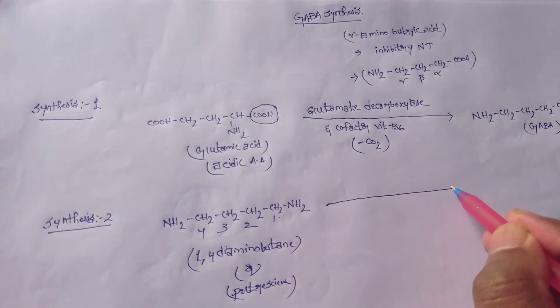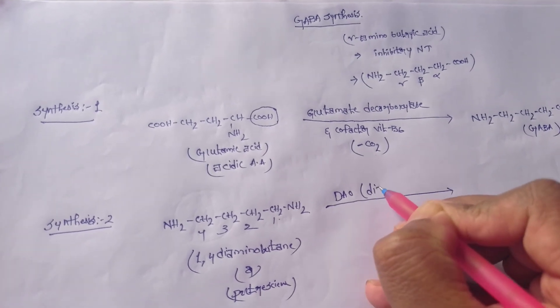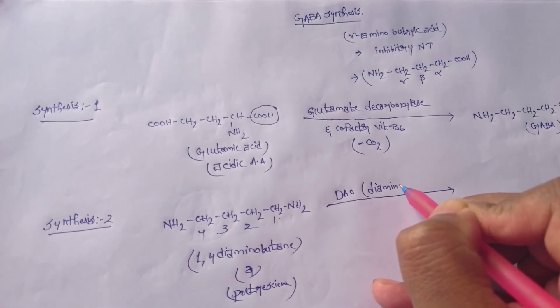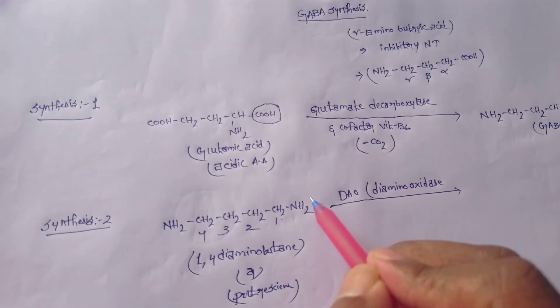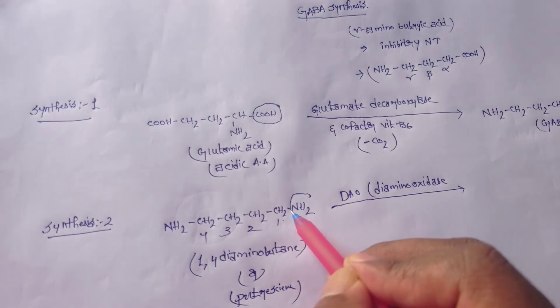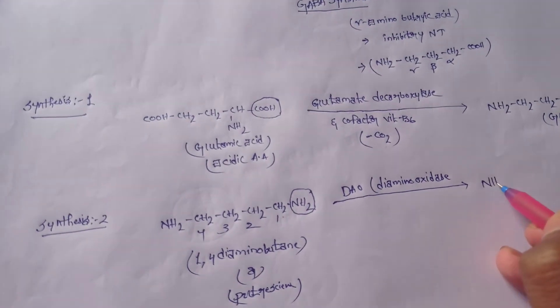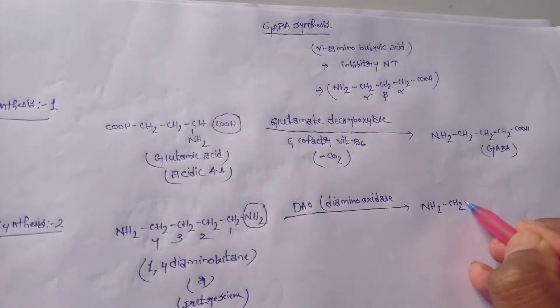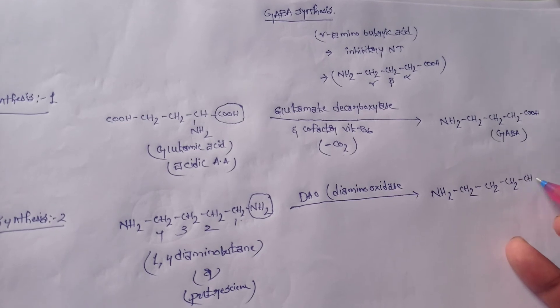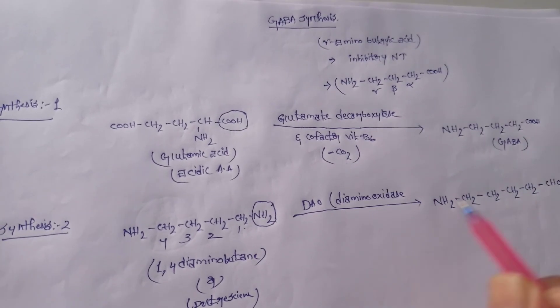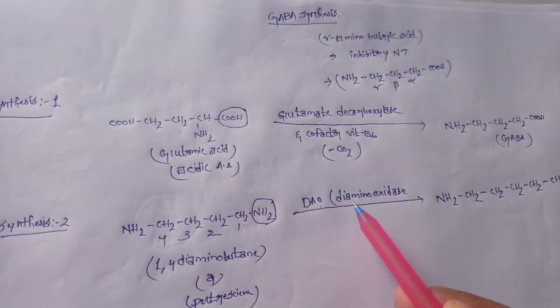In the presence of DAO, diamine oxidase, an enzyme which is helpful for the oxidation of amino group into aldehyde group. The amine group is oxidized to aldehyde group in the presence of diamine oxidase.